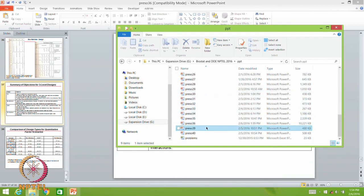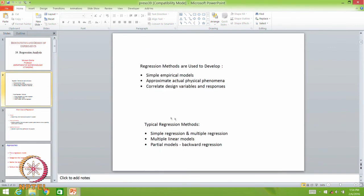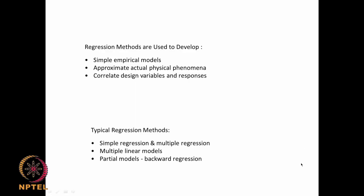So what is regression analysis? Regression methods are used to develop simple empirical models. We can get y = a + bx₁ + cx₂ where x₁, x₂ are parameters. For a second order model: y = a + bx₁ + cx₁² + dx₁x₂ and so on. We can get actual understanding of the physical phenomena and correlate design variables. Typical regression methods include simple regression, multiple regression, multiple linear models, partial models, backward regression, non-linear models, and second order models.